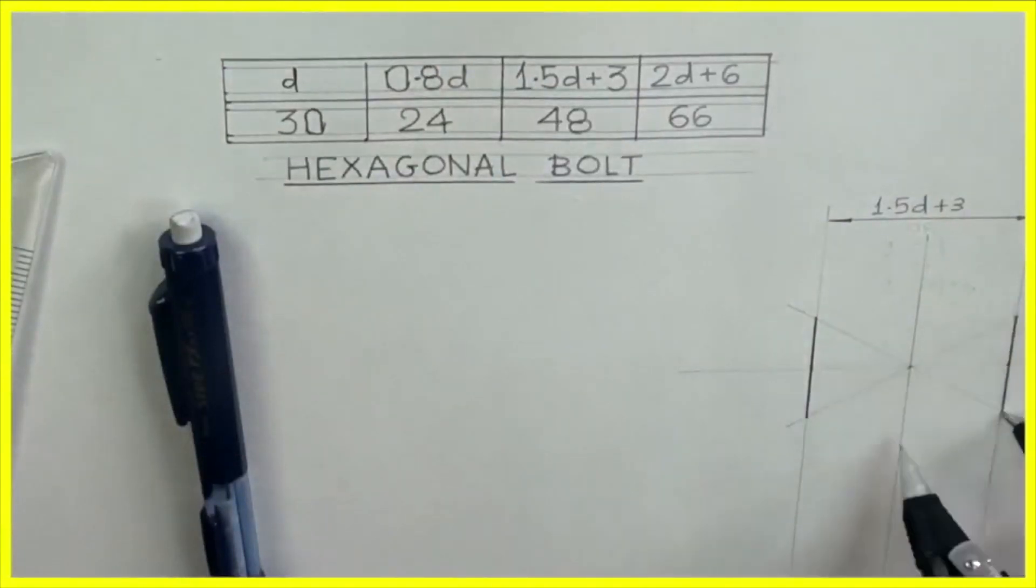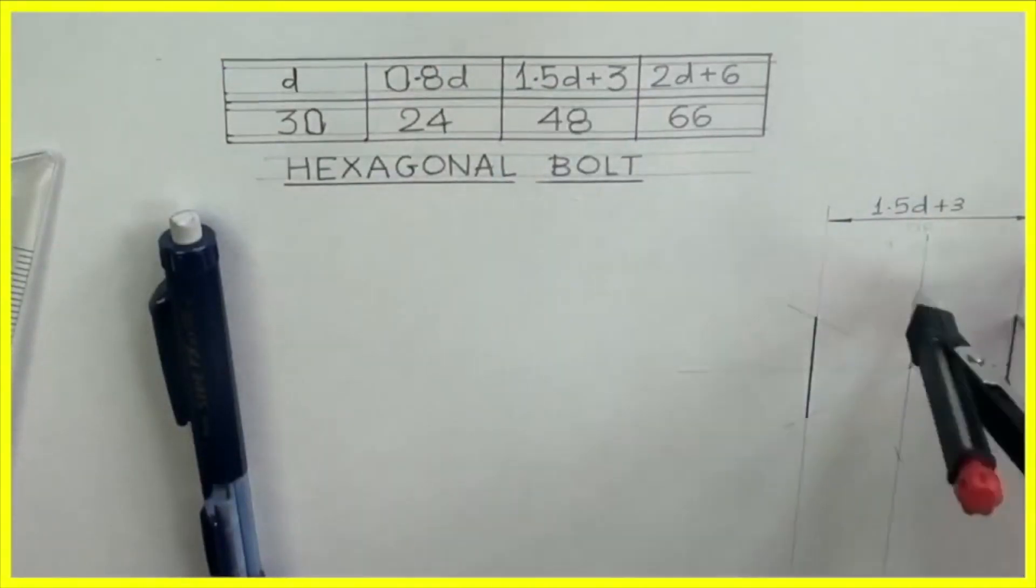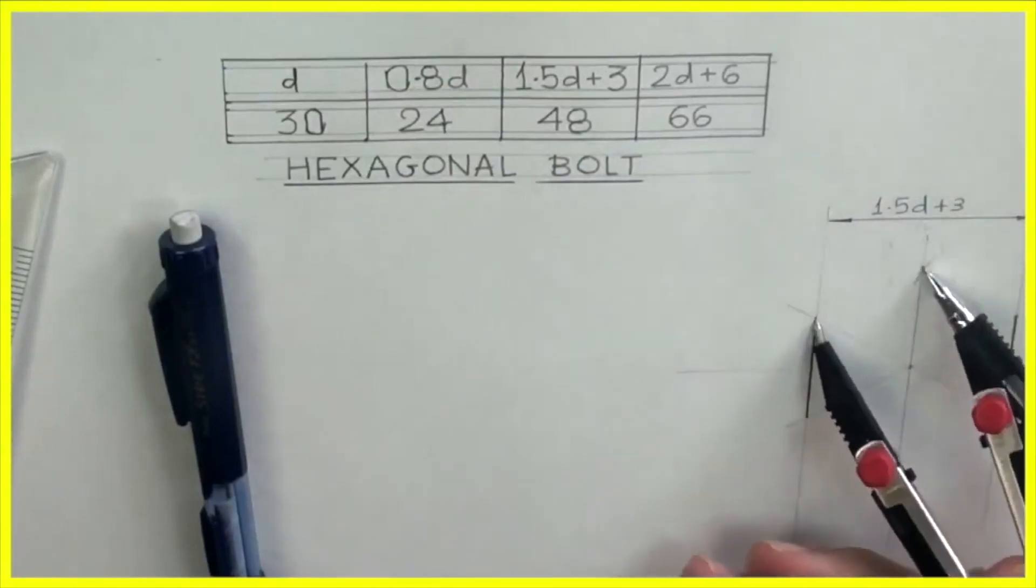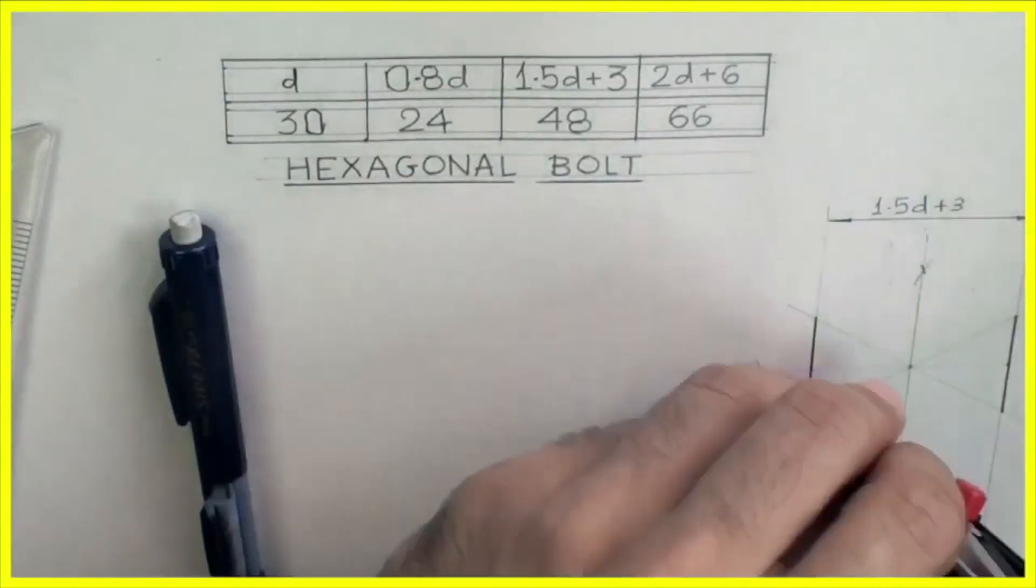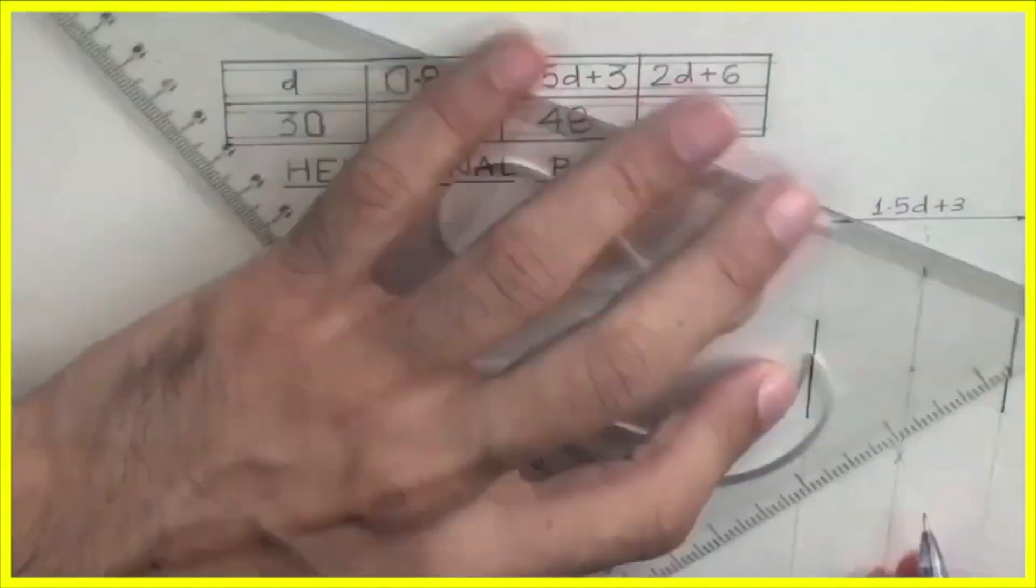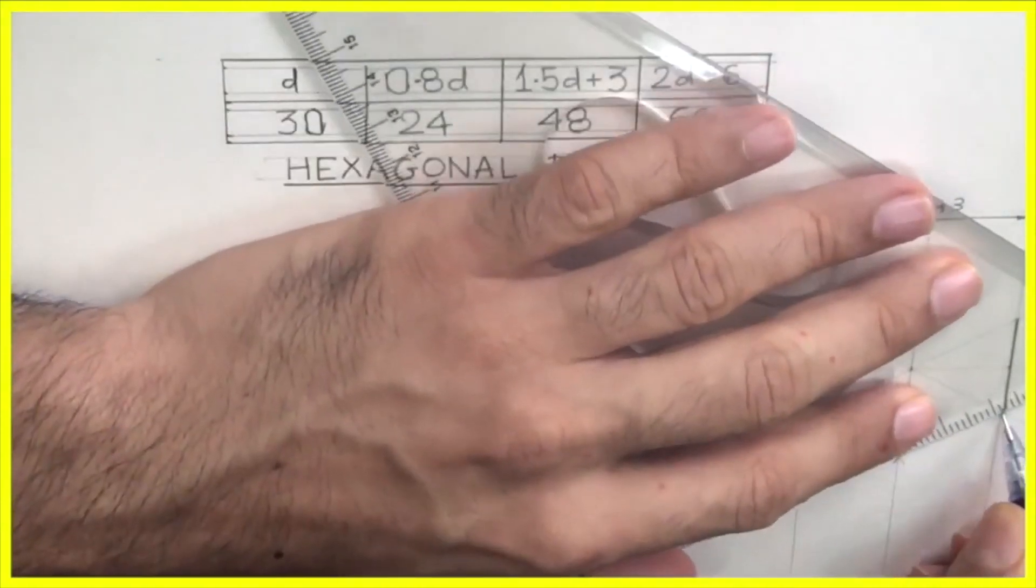Now take this side, cut down. From here you cut up. This is how you will get hexagon. Then you join them. So you will get the hexagon.